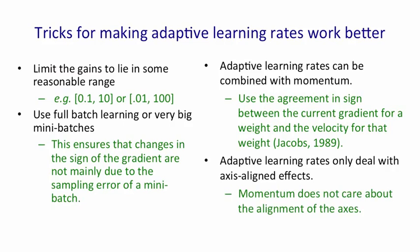Adaptive learning rates only deal with axis-aligned effects, whereas momentum doesn't care about the alignment of the axes. Momentum can deal with these diagonal ellipses and going in that diagonal direction quickly, which adaptive learning rates can't do.